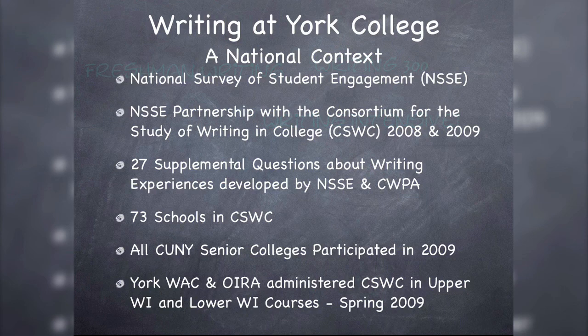The National Survey of Student Engagement asks a lot of questions about how much time you spend studying, how much time you work, how much time you commute, what are you learning in your classes, and whether you're engaged in extracurricular activities — a whole host of questions. It's a well-respected survey. Around 2007, one of my professional organizations — the Council of Writing Program Administrators — began to work in concert with the National Survey of Student Engagement to develop an additional set of questions about writing, about students' writing practices, to dig a little bit more deeply into writing on college campuses. They formed a partnership and created what's called the Consortium for the Study of Writing in College — the CSWC — piloted questions in 2008 and 2009, and then launched the supplemental writing questions.